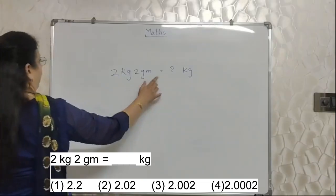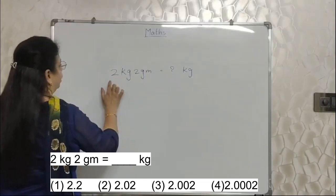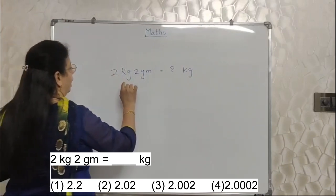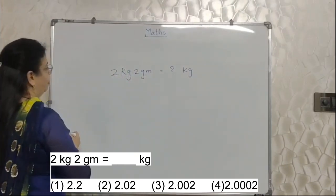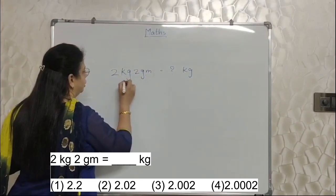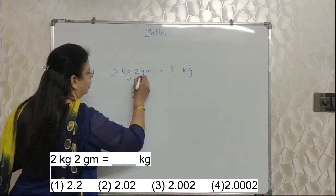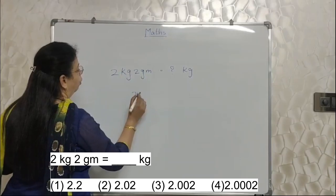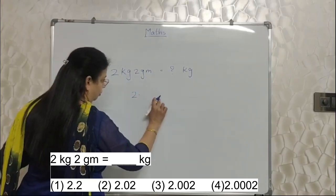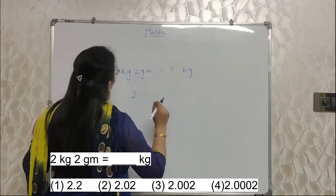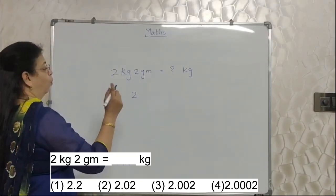See, 2 kg 2 gram is equal to how many kg? Here there is no tension because this is already kg. Kg and gram, uske bich mein aiga decimal. So this there is no tension, 2 kg. Decimal, now gram. Now how to write 2 here? That will decide whether you are going to get 2 marks or no.